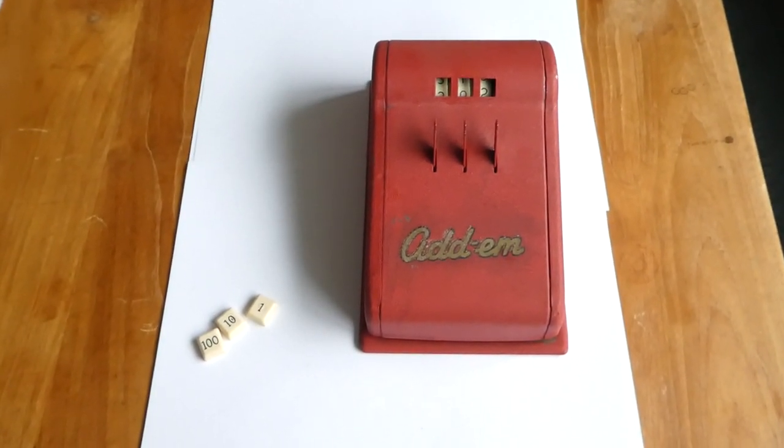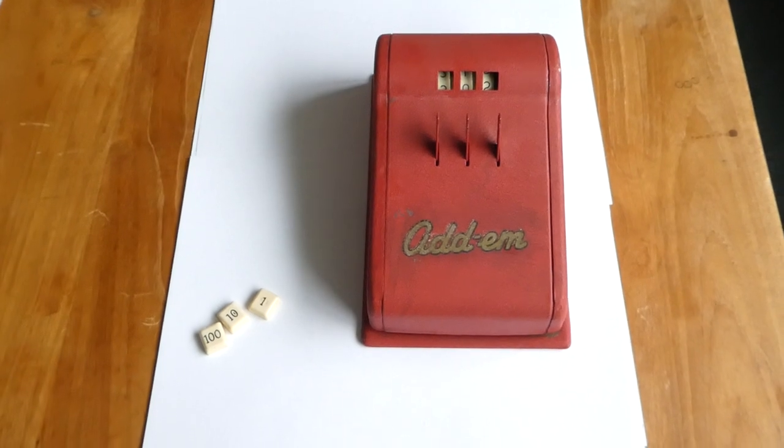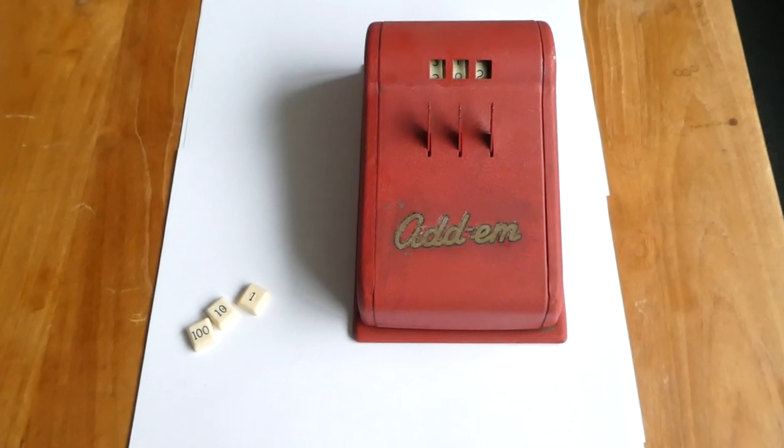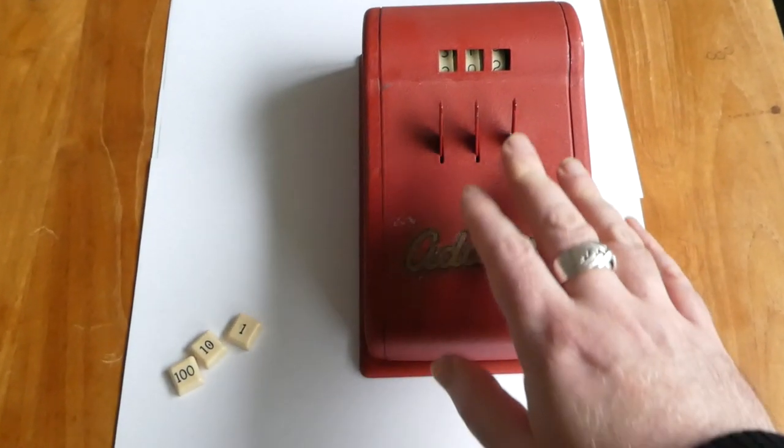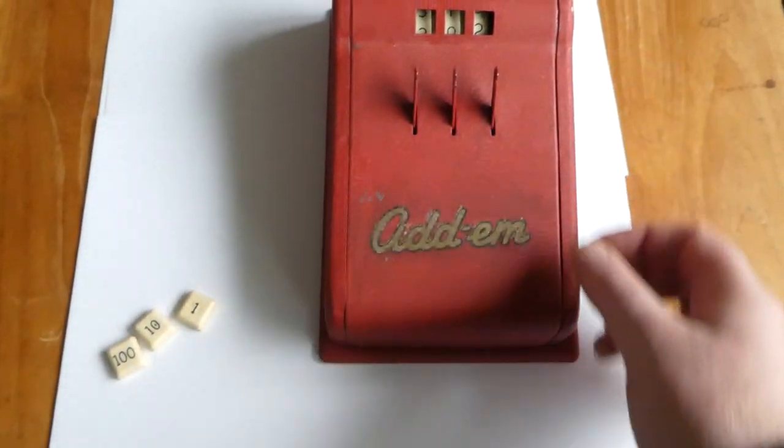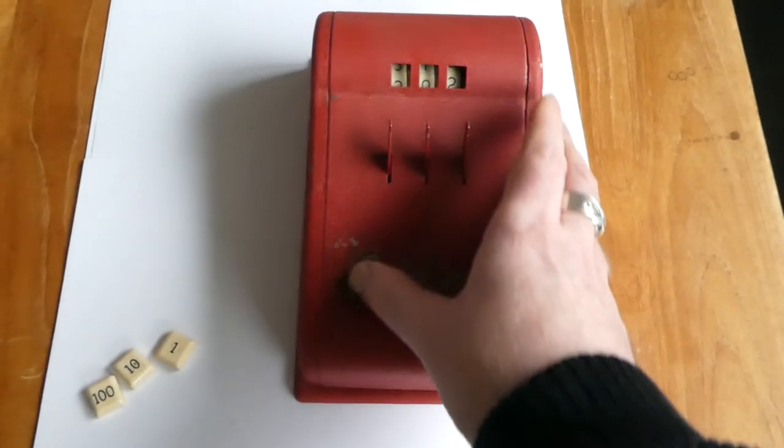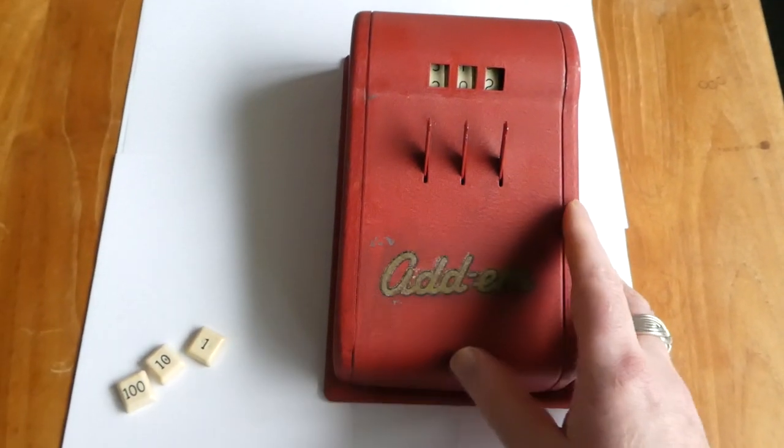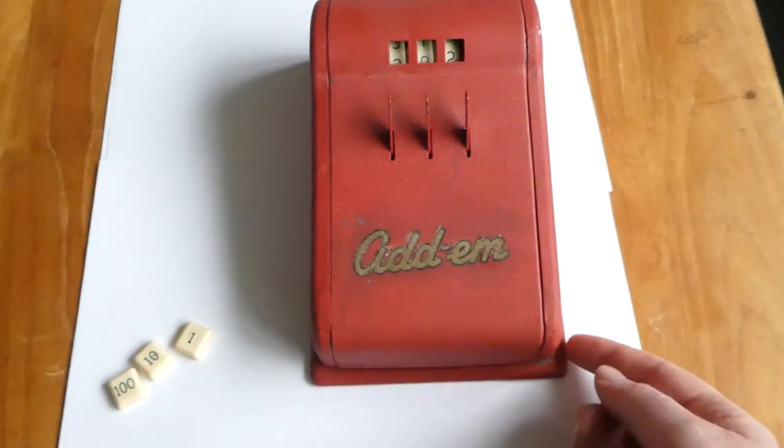In this video I want to show you the mechanism of the Adam toy calculator. I have already removed the three buttons by pulling them off the stems and separated this top case from its base.